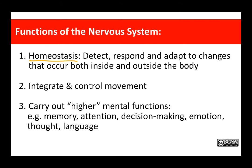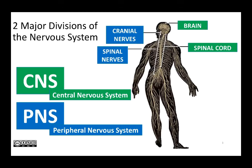Last but certainly not least, the nervous system carries out what we think of as higher mental functions: our ability to form memories, to pay attention, to make decisions, to feel emotions, to feel sensory stimulation, as well as our ability to generate thought and language. To set the stage for our study at the cellular, molecular, and tissue level, I'm going to give you a big picture view first and then show you a short video about how psychoactive drugs affect the nervous system — something most people have a passing interest in, and something you can't understand without the basic cellular and molecular material we're going to cover.